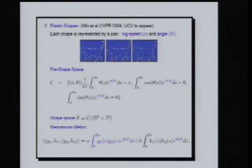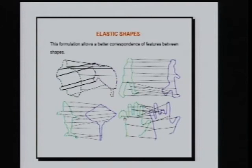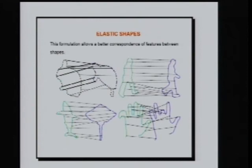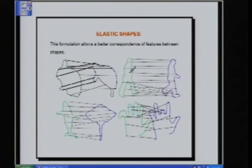Consider two curves. If I fix arc-length parametrization on both, once I've chosen the starting point all other points are immediately registered: any point at distance 10 from the origin is registered to the point at distance 10 from the other. By relaxing the arc-length requirement and allowing all possible parametrizations, you allow more feature matching. Features at different arc-length distances can still be matched because of the stretching and compressing allowed by the elastic metric.